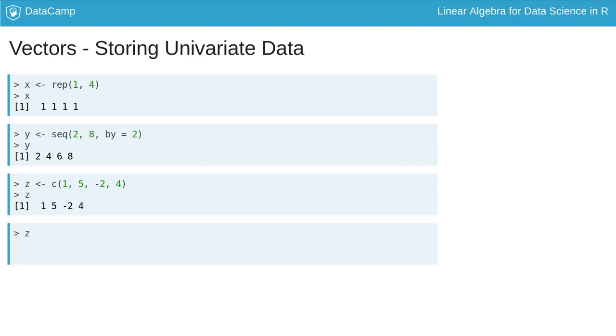Lastly, elements of a vector can be changed individually by selecting an index and using the assignment arrow. For example, to change the third element of z to 7, simply write z 3 assignment arrow 7.